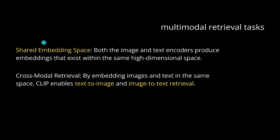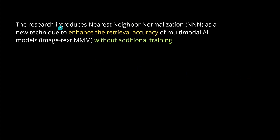Today we find a new solution — or even multiple solutions — because we are facing known problems: a bias and efficiency challenge, especially in multimodal retrieval tasks. Both the image encoder and text encoder produce embeddings in the same high-dimensional mathematical space, enabling cross-modal retrieval — text-to-image and image-to-text. This latest research introduces nearest neighbor normalization as a new methodology to enhance the retrieval accuracy of multimodal AIs without additional training.